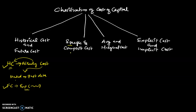Then specific and composite cost. Specific cost, as its name indicates, is the cost of a specific source of capital — for example, cost of equity, cost of preference shares, or cost of debentures.